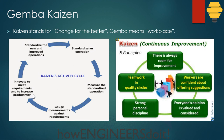Once we do that, we innovate and do some improvement to increase productivity. After the improvement, we standardize the new and improved operation — that achieved baseline becomes the new standardized baseline for the next cycle. This is basically like the PDCA cycle.